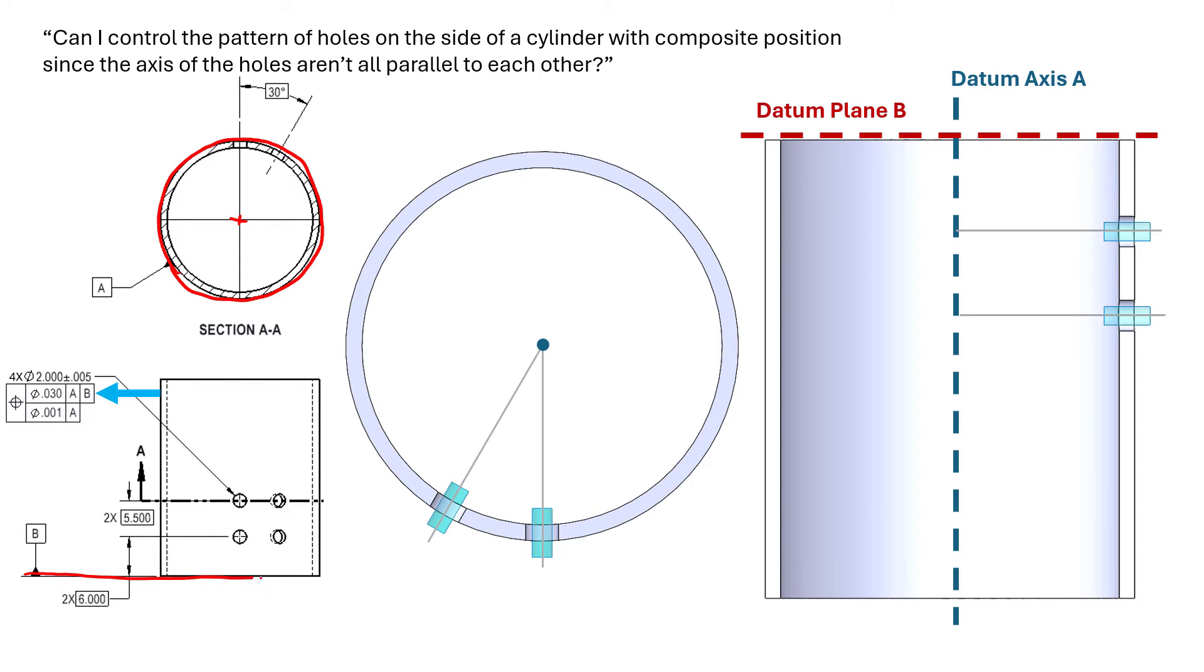So we can see here on this image we have datum axis A and datum plane B. Now all four of these holes can utilize the datum reference frame A B to fully constrain themselves. We have perpendicularity to datum axis A, and we're coincident. The axis of this hole has to hit the axis of datum A, so we've controlled that polar location, the rotation about that axis as well as the location with respect to each other. We've controlled the location back to B as well since we listed B as a secondary datum. So we've controlled the six degrees of freedom of all four of these holes as much as necessary.